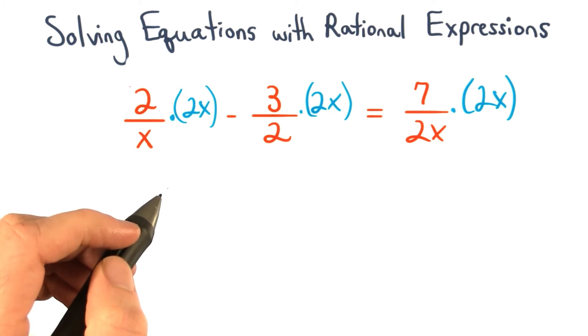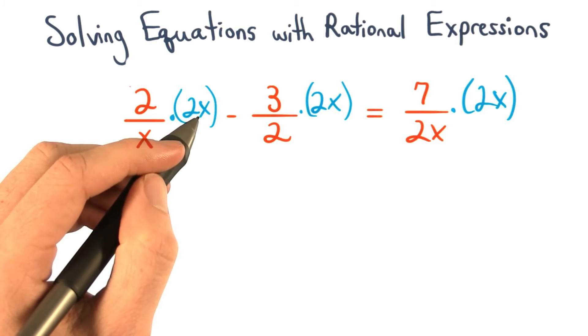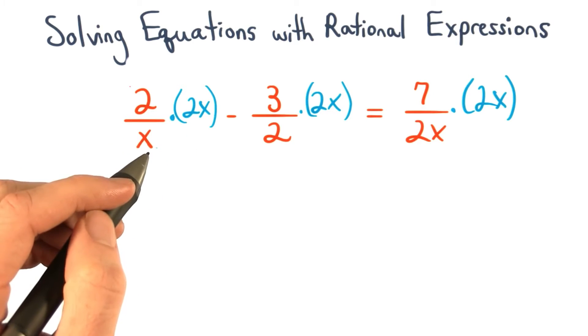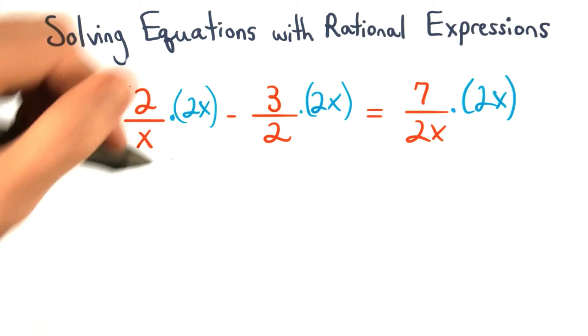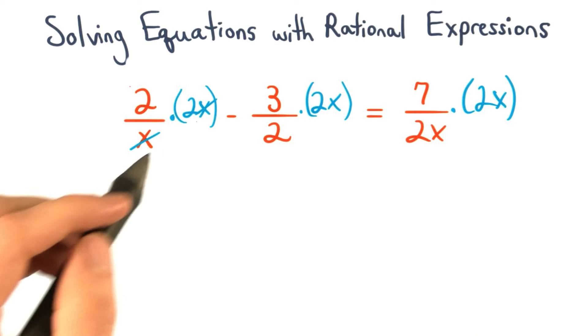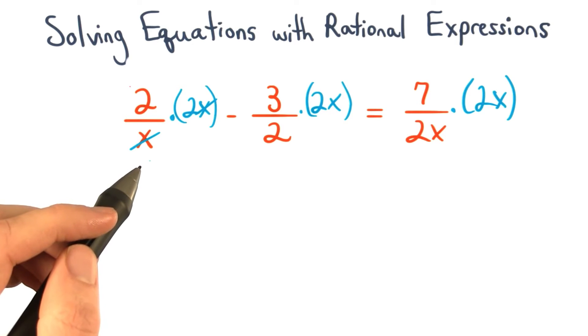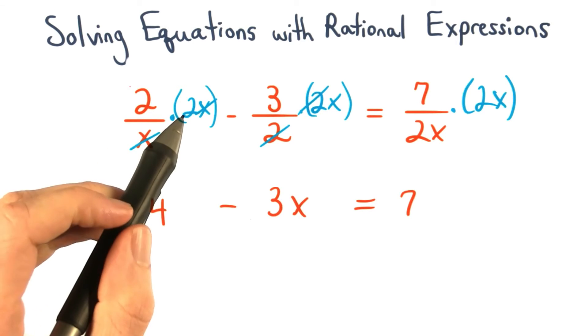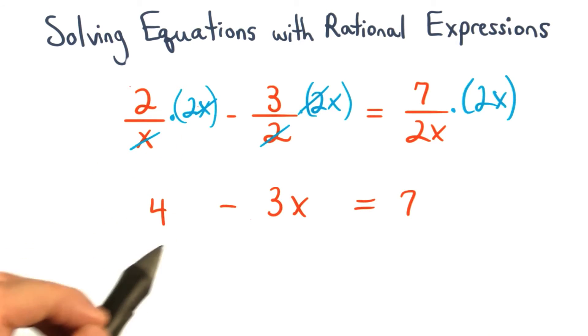To get the answer, we simply simplify the factors in the numerator and denominator. For this first term, the x's would cancel to equal 1. This would leave us with 2 times 2, which equals 4.